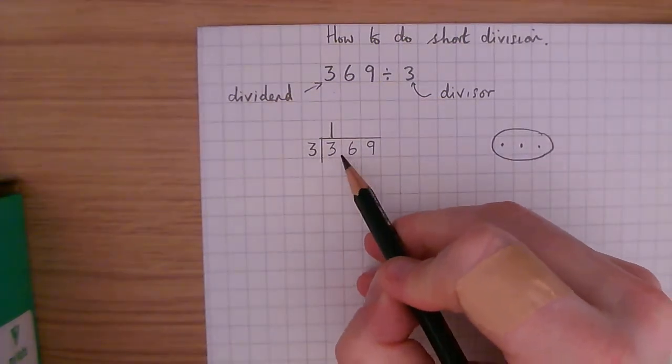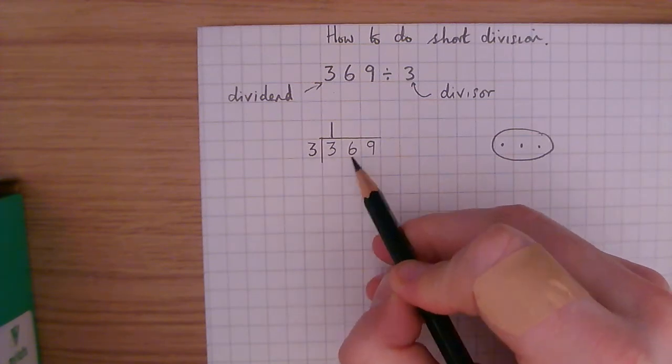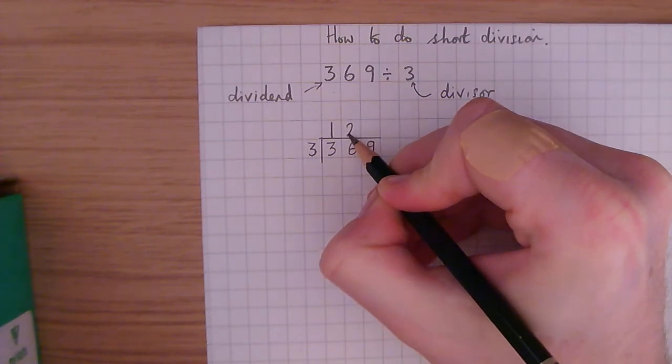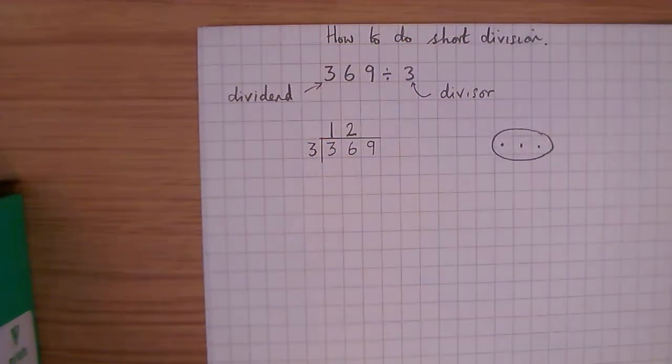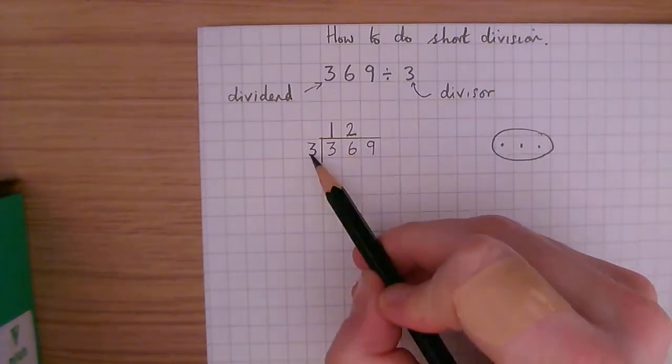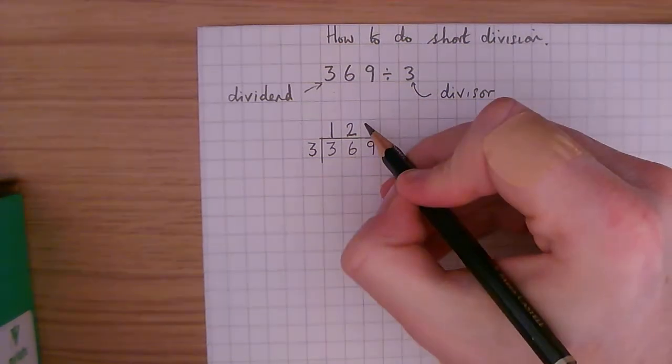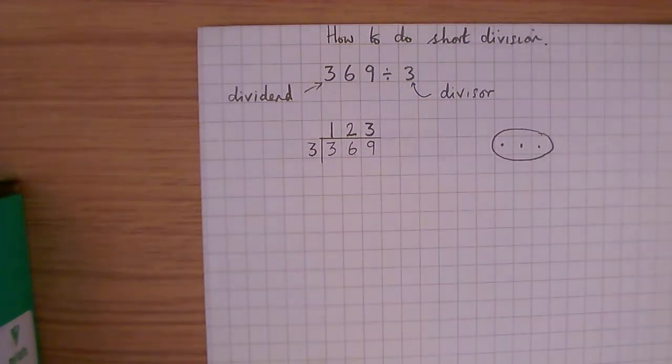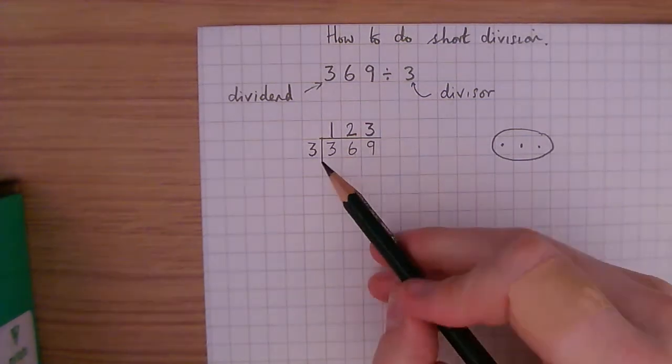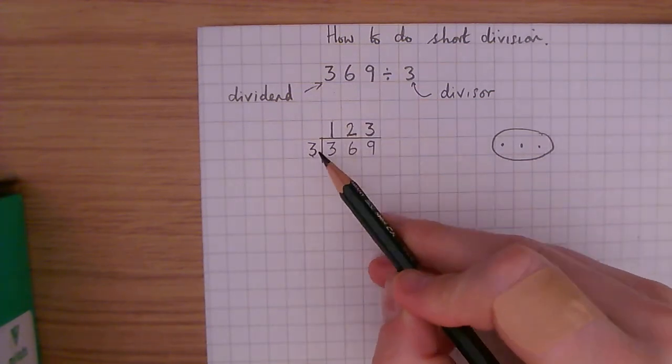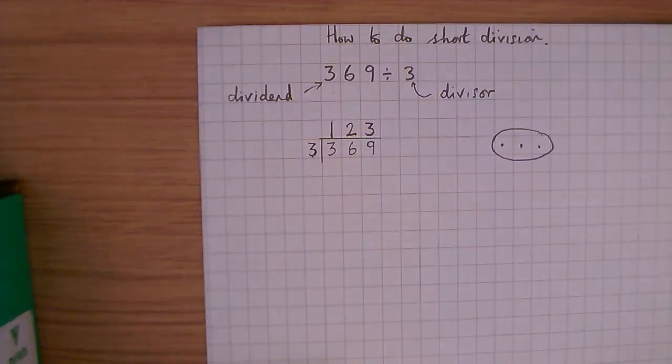Then we're going to say 6 divided by 3, or how many 3's are there in 6? And that's 2. 3, 6. And then finally, how many 3's are there in 9? 3, 6, 9, 3. So 369 divided by 3 is 123. 3 into 3 goes once, 3 into 6 goes twice, and 3 into 9 goes 3. That's quite a straightforward example because there's no remainders.